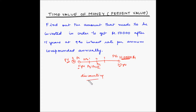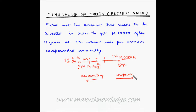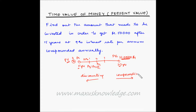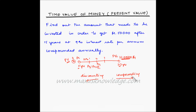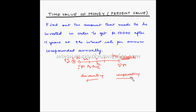If you are going from future value back to present value, the concept is known as discounting. If you are going from present value forward to future value, it is compounding. Basically, discounting is simply the reverse of compounding.